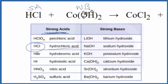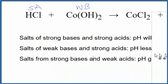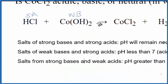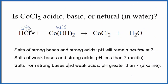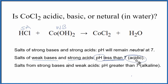We know it's a base because of the OH. So we have the strength of the acid and the base; now we can use the rules. We're looking for a strong acid and a weak base — here it is. So the pH is going to be less than 7, meaning our solution will be acidic. So in answer to our question, CoCl₂ when put in water will form an acidic solution.